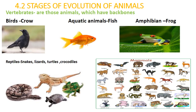Vertebrates are those animals which have a backbone. For example, birds like the crow. Next, aquatic animals are those which live in water — example, fish. Amphibians are those animals which live in water as well as on land — example, frog. Reptiles are those animals which crawl — example, snake, lizard, turtle, crocodile. The last vertebrate category is mammals, which you will study more about in the coming slide.